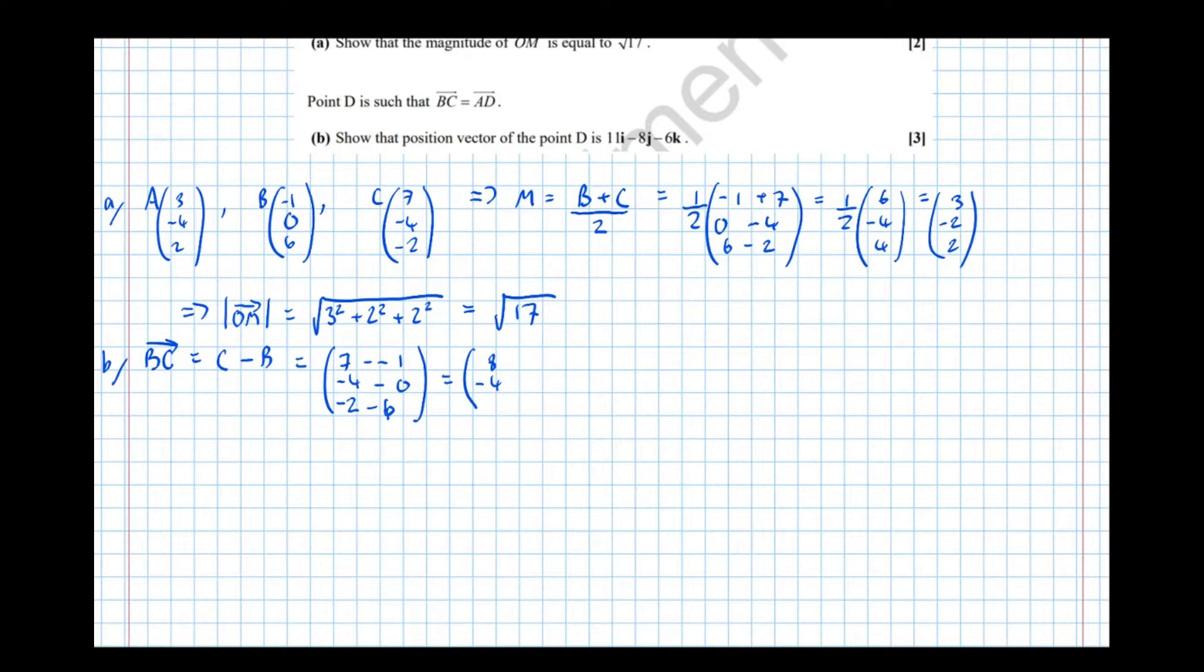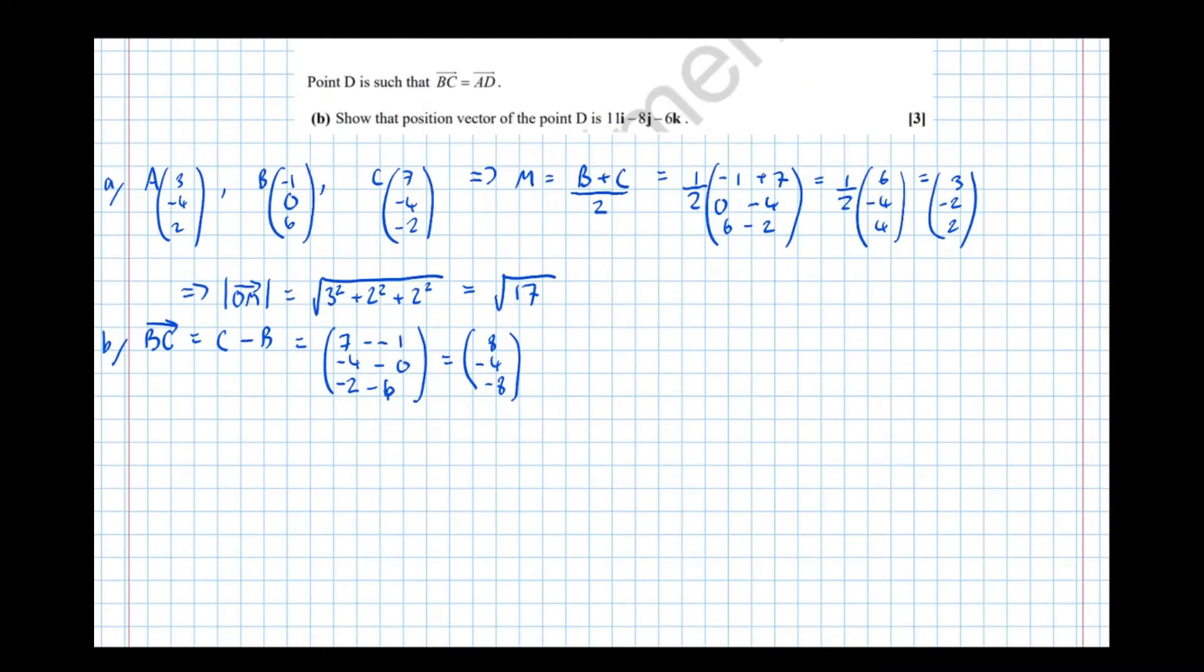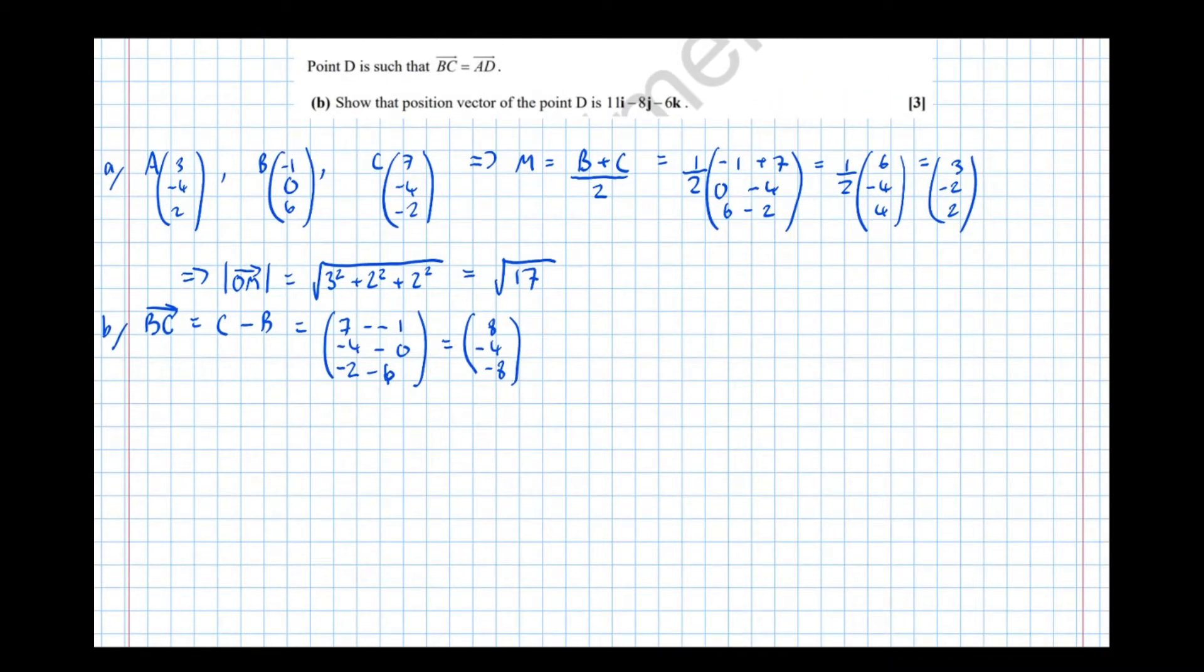So that's our BC. Now we want AD. Well let's let D be the vector D1, D2, D3. So here's the three unknown components that we're going to find, and that means that AD is D take A which is D1 take the first component of A which is 3, D2 double take form, and D3 take 2.